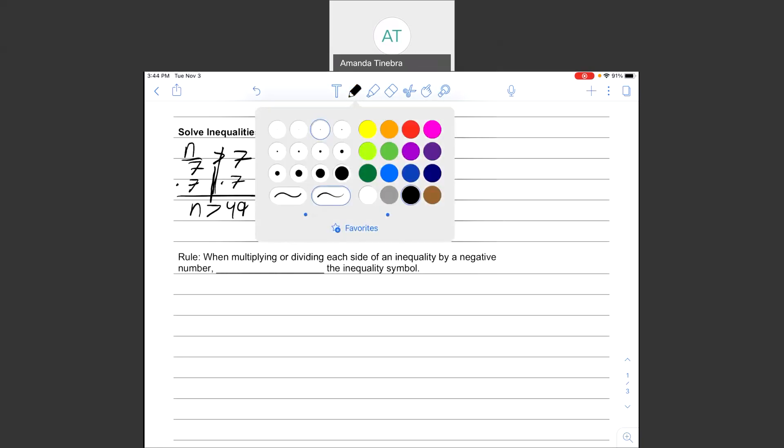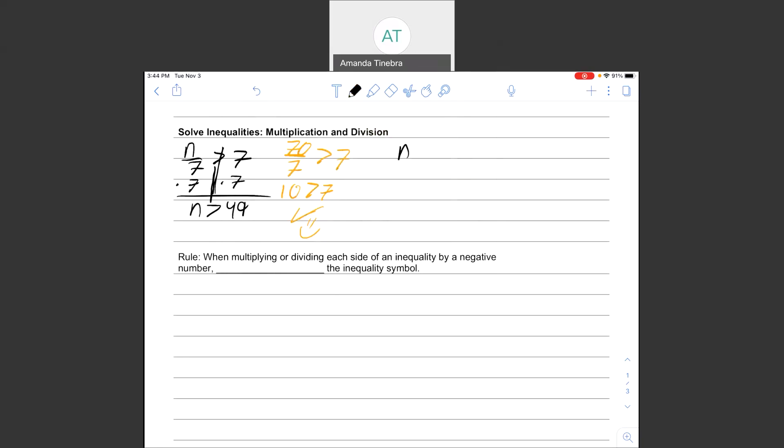Now, let's try n divided by negative 7 is greater than 7. Okay? If I do the same thing, I multiply by negative 7 on each side, I get n is greater than negative 49.